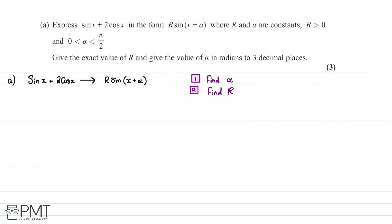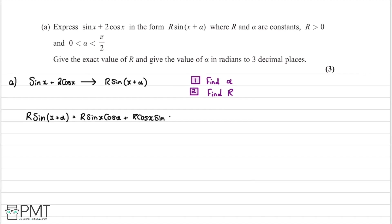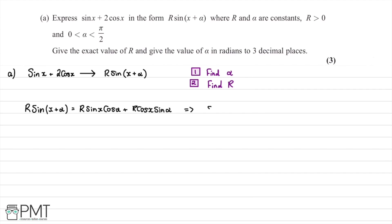Our first step is to define alpha. Using trig identities, r sin of x plus alpha expands to r sin x cos alpha plus r cos x sin alpha. From this, we match coefficients: sin x gives us r sin x cos alpha, and 2 cos x gives us r cos x sin alpha.